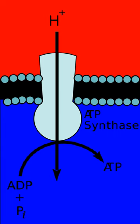When electron transfer is reduced by a high membrane potential or respiratory inhibitors such as antimycin A, Complex III may leak electrons to molecular oxygen, resulting in superoxide formation. This complex is inhibited by British anti-lewisite, naphthoquinone, and antimycin.